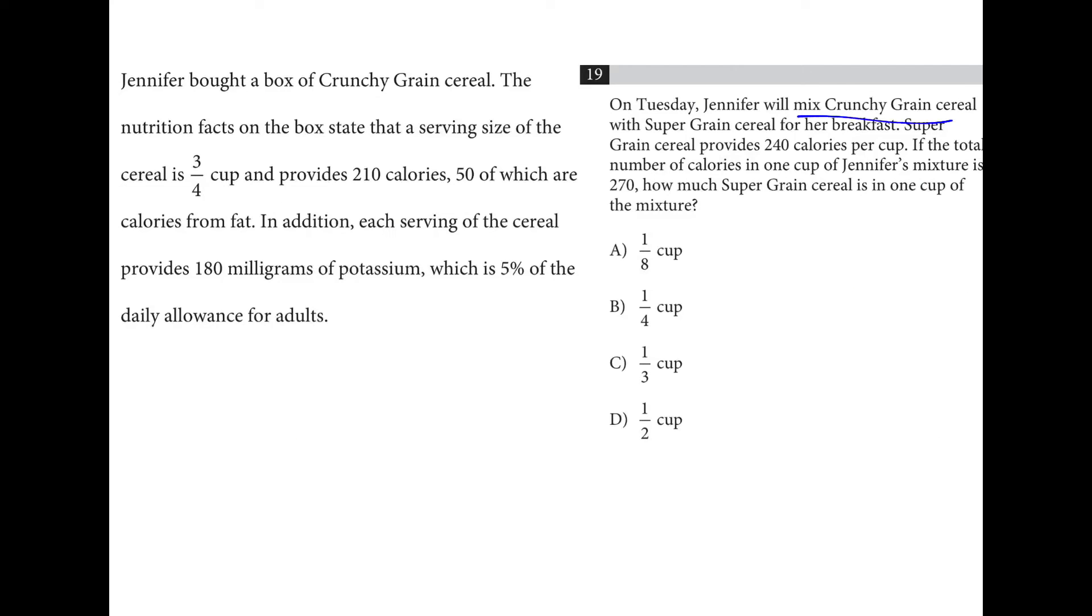Jennifer is mixing crunchy grain cereal with super grain cereal. Crunchy grain has 210 calories for every 0.75 cup, and super grain, 240 per cup. And they want to figure out the proportion of each type of cereal that will give you 270. So first, let's convert this one to 1. And dividing by 3 fourths is the same as multiplying by 4 thirds. So I'll take 210 times 4 divided by 3. And this would be 280 per cup.